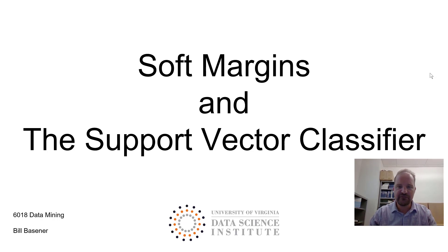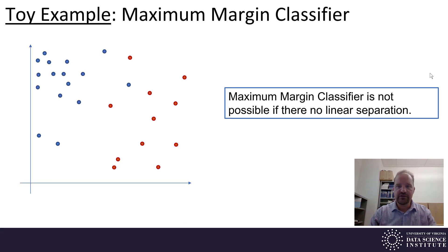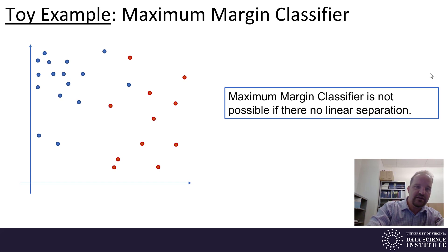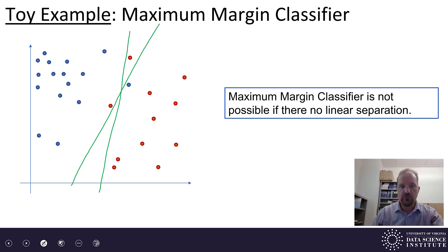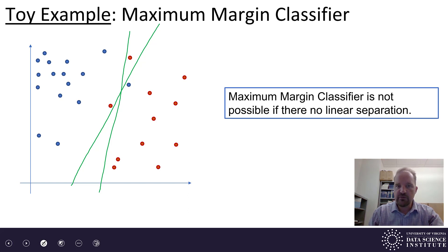Welcome to the lesson video on soft margins and the support vector classifier. In this video we're going to talk about a classifier that's similar to the maximum margin classifier but uses what's called soft margins. We'll start with a toy example. Looking at the data set, it has two classes, red and blue. If we try to separate these with some linear separation, whatever you try, there's no linear separation that's going to work perfectly. And yet either of these lines would provide a somewhat reasonable separation. The goal is to extend our ideas of the maximum margin classifier to allow for a little bit of error — some data points are going to be allowed across those margins. So they're not going to be strict margins, they're going to be soft margins.